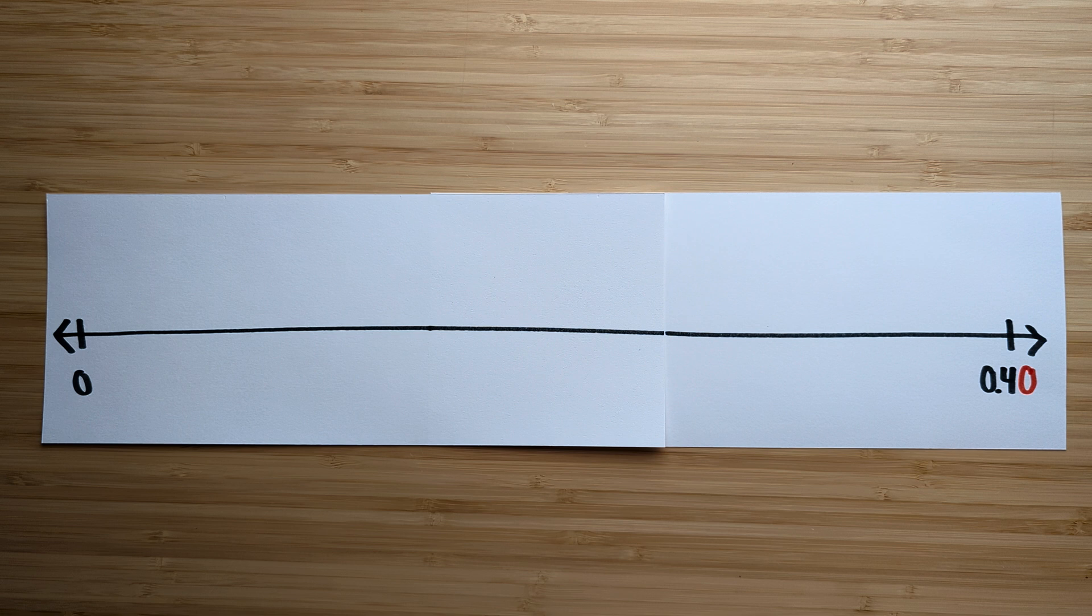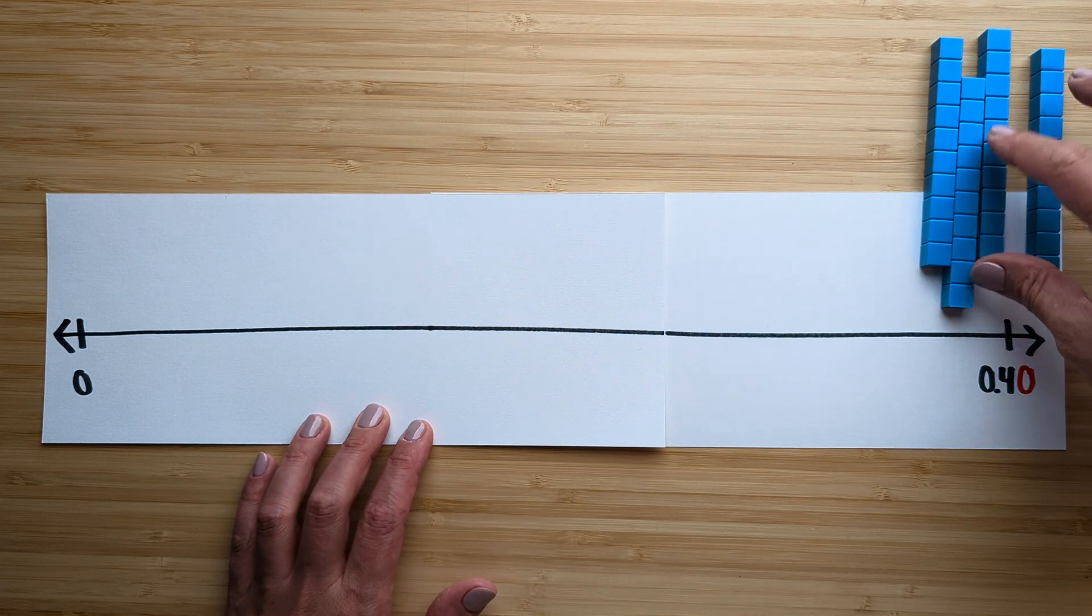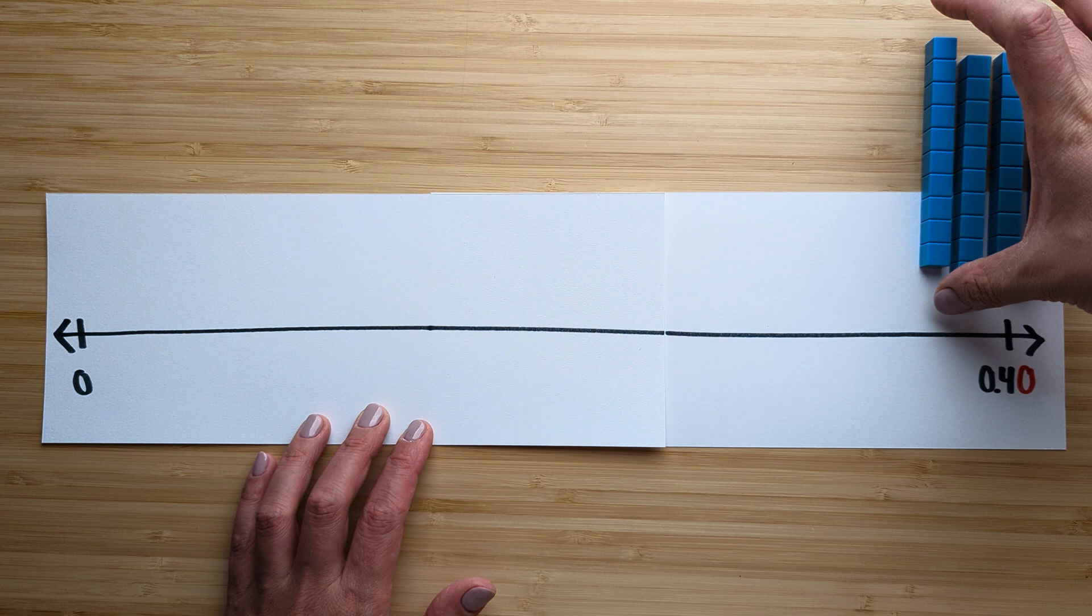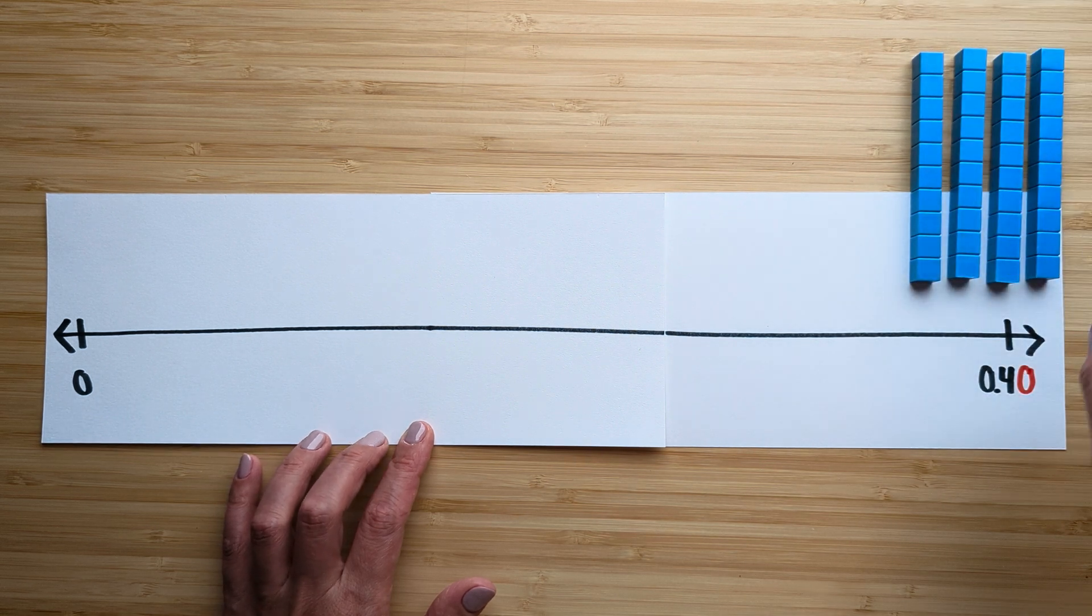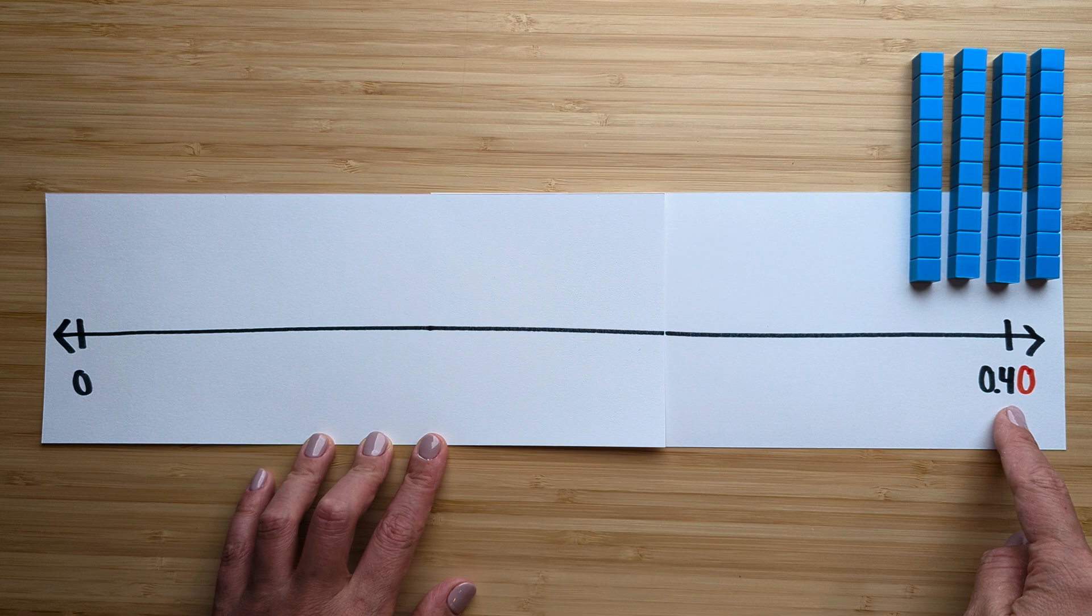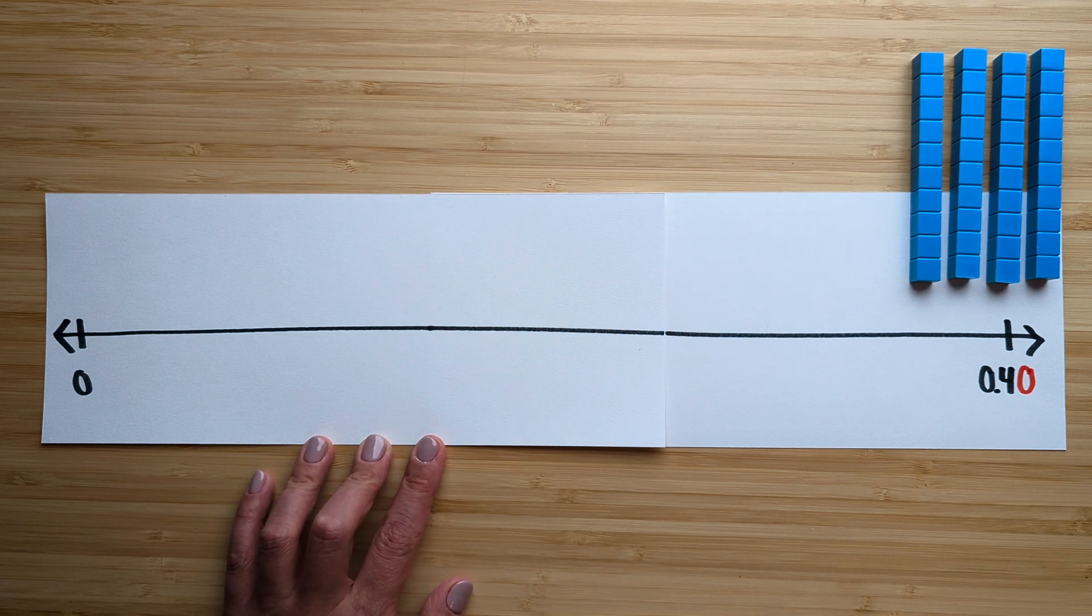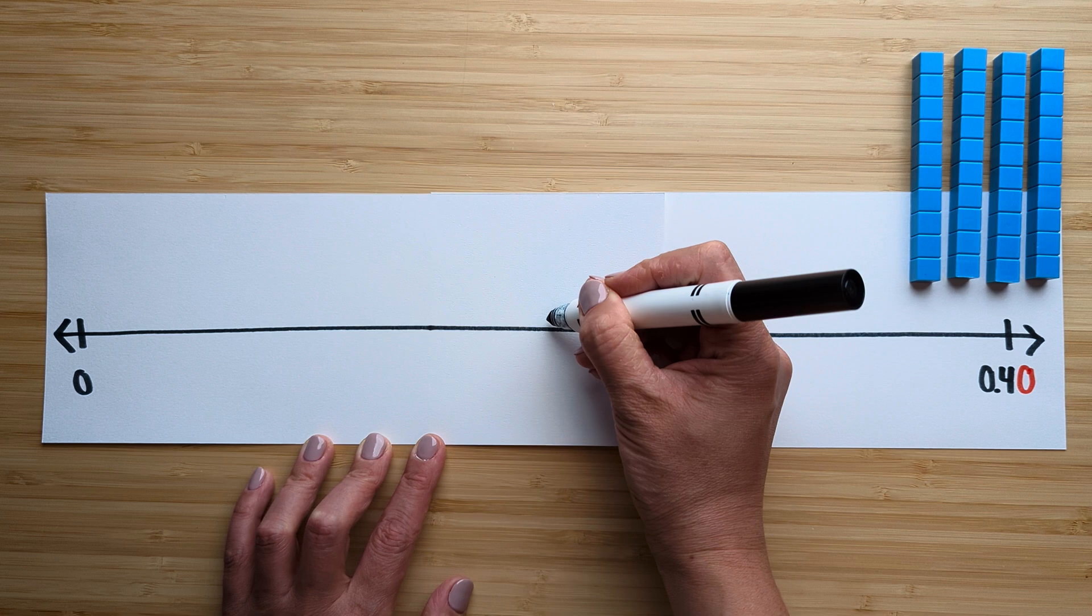Remember four tenths is the same thing as 40 hundredths. All right, so let's represent that four tenths. And remember if you're ever stuck on what the midway point should be, just think about half of the highest value. So it's half of 40 hundredths. Half of four is two. Here's my halfway point.